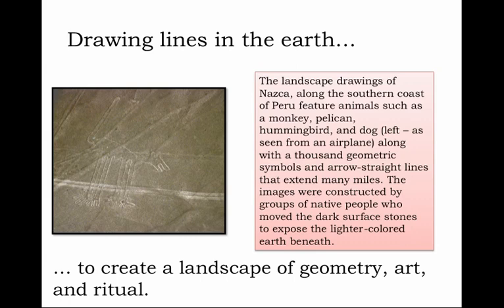Drawing lines in the earth to create a landscape of geometry, art, and ritual: here is an aerial photograph of an extraordinary portrait called the dog — one of many landscape drawings of the Nazca, a people who lived along the southern coast of Peru. They created great works of art in the landscape itself, featuring animals such as a monkey, a pelican, a hummingbird, and this dog. This is an aerial view — an enormous portrait created by native people who removed dark surface stones to reveal the lighter colored earth beneath, mixed with thousands of geometric symbols and arrow-straight lines extending for many miles, only completely visible from the air.